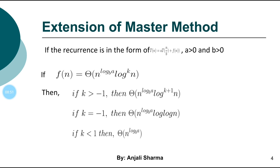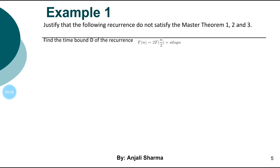Now let's start with examples to make this clearer. The first example has the equation T(n) = 2T(n/2) + n log n.